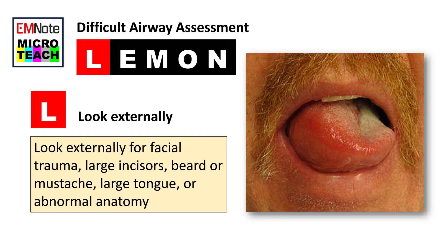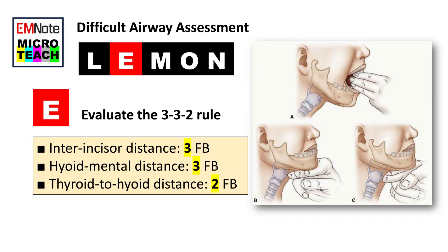E stands for Evaluate the 3-3-2 rule. This rule assesses the patient's mouth opening (three finger breadths), the hyoid-mental distance (three finger breadths), and the thyroid-to-hyoid distance (two finger breadths). These measurements can indicate potential difficulties in intubation.